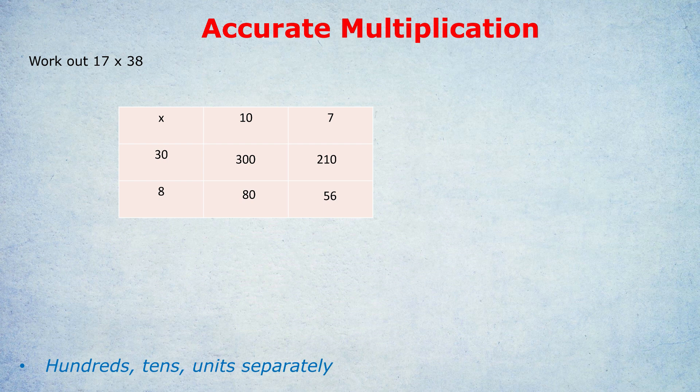Now some of you will still not be convinced, but when we get onto the harder calculations I think I can convince you. Anyway, what do we do now? Once we've done all those multiplications, we do a nice neat column containing those numbers: 300, 210, 80, and 56. And now all it is is simple addition. We've turned a really hard multiplication into a simple addition. How do we add those numbers? And it's really important you do it neatly. You look at the units digit column: 0 plus 0 plus 0 plus 6 is 6.